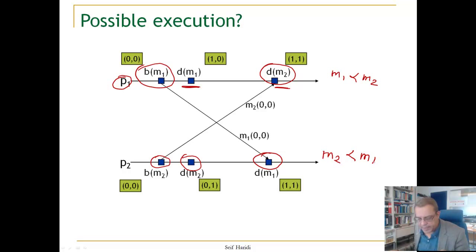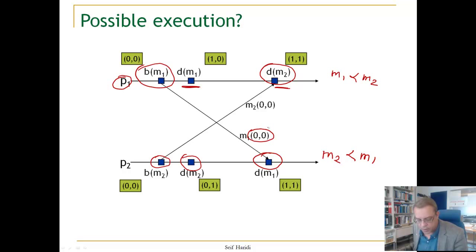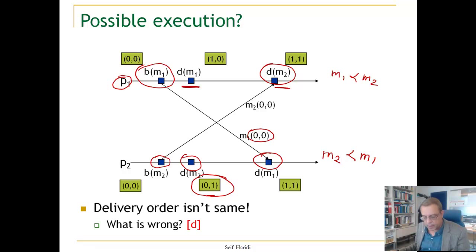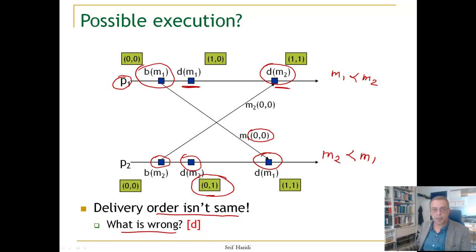If we examine the vector clocks carried with a message against the local vector clock — for example, for M1 here, this vector clock is less than the local vector clock, and therefore you are allowed to deliver the message. The same is for M2. We see there is no problem. The delivery order here is not the same, so is there something wrong? The answer is nothing is wrong.